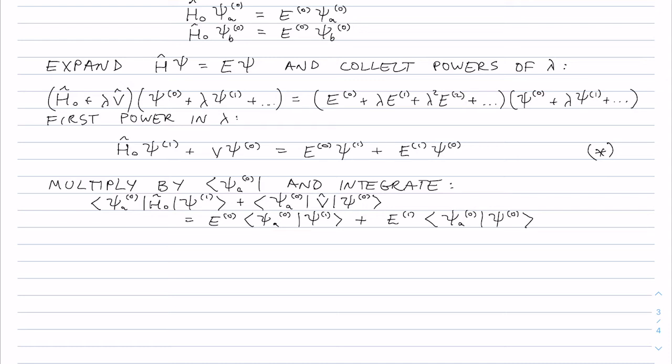So if we look at the first term on the left hand side, this one here, and the first term on the right hand side, they're actually exactly equal to each other because you can apply the H naught to the left and pull out the E naught here. So the first terms cancel.